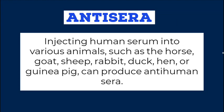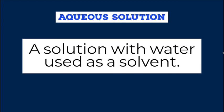Antisera: Injecting human serum into various animals, such as the horse, goat, sheep, rabbit, duck, hen, or guinea pig, can produce anti-human sera.